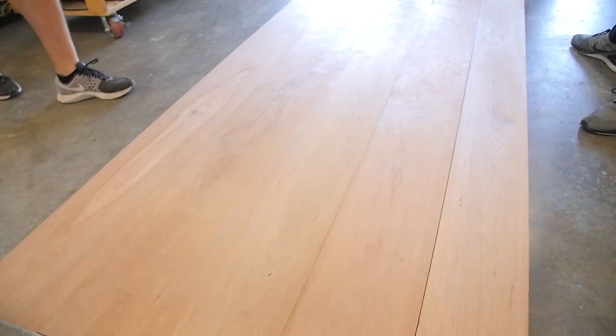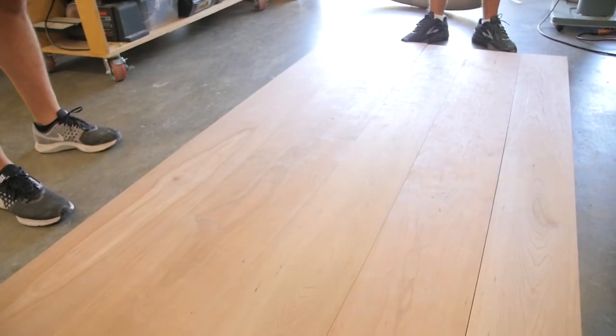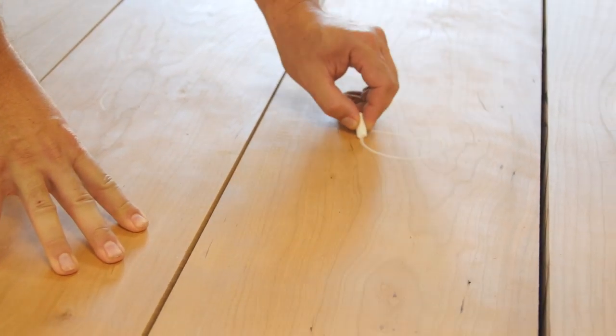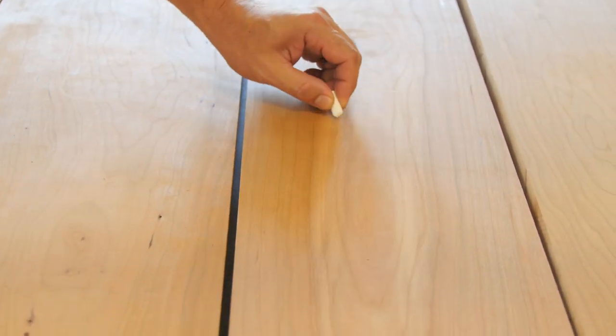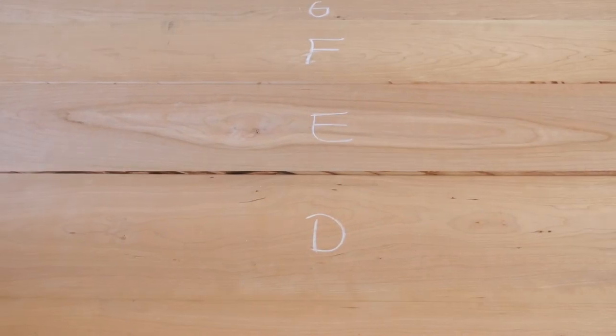When figuring out which way to lay out the boards, we took into consideration which boards looked best next to each other, the grain direction, and the width of each board. And once we figured out the best way to lay them out, we gave each board a letter so that we knew how to glue it back together.